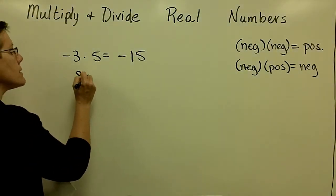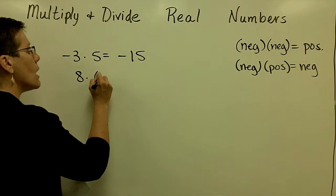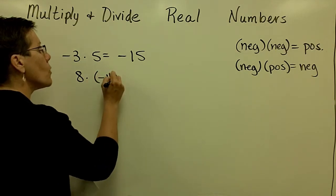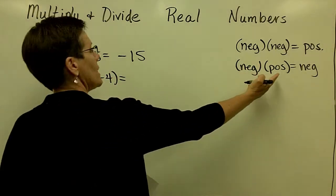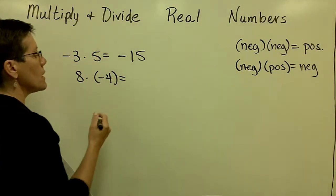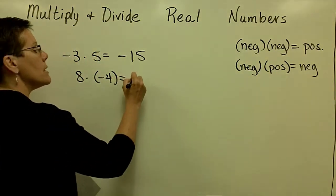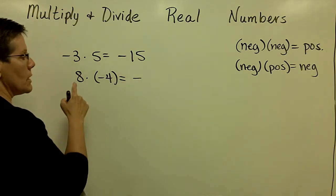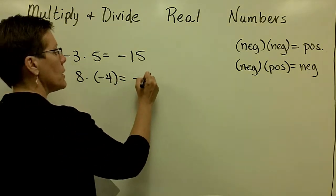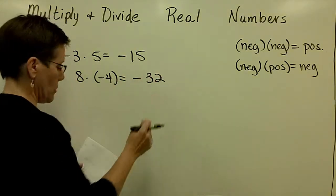8 times a negative 4: a positive times a negative gives me a negative result, and 8 times 4 is 32.